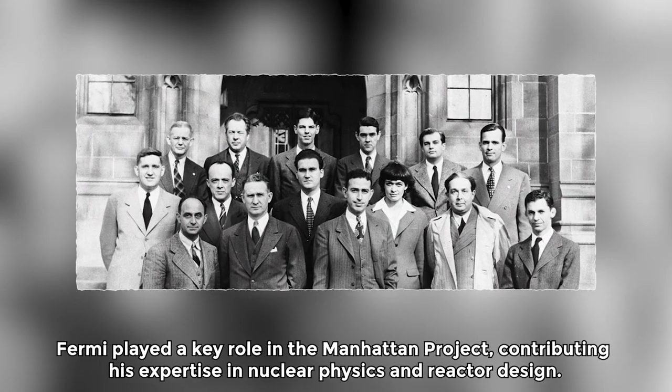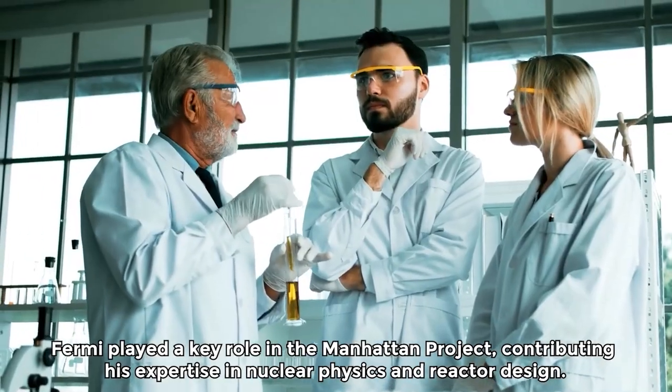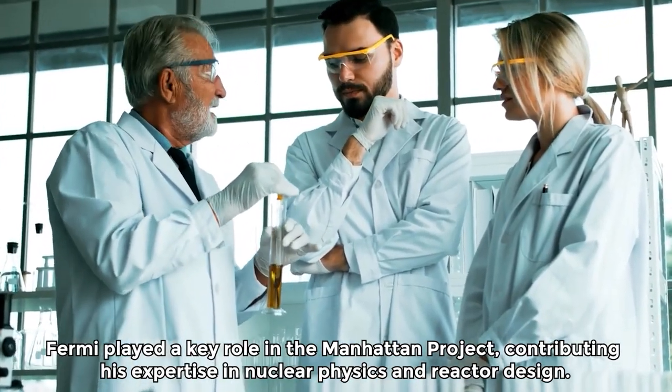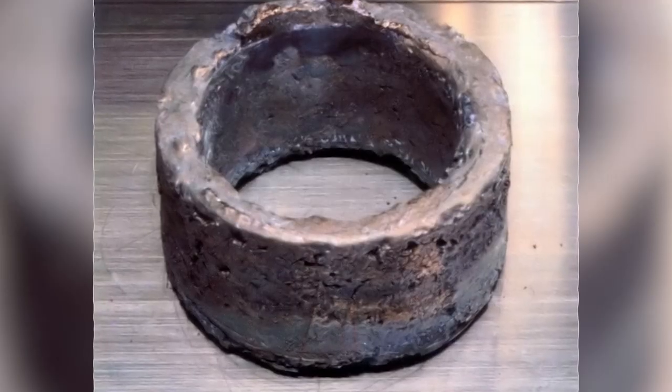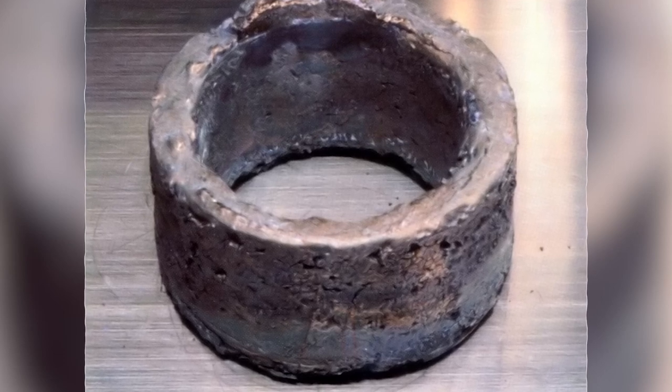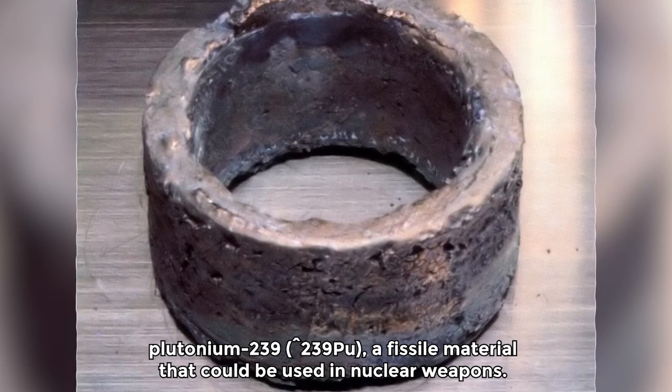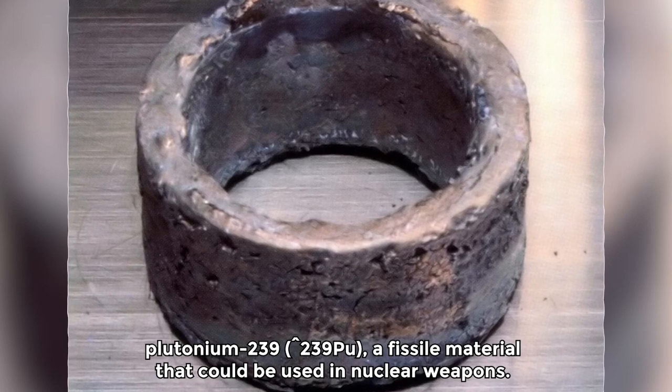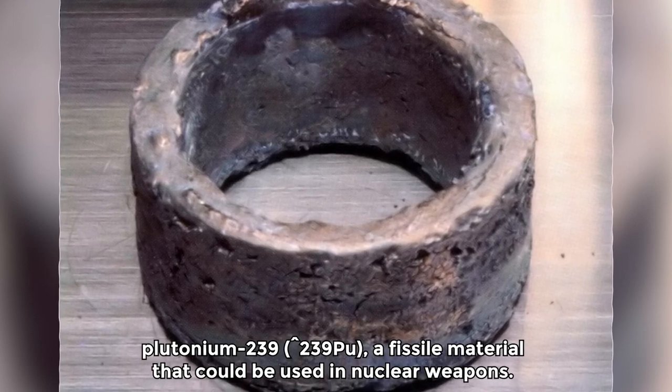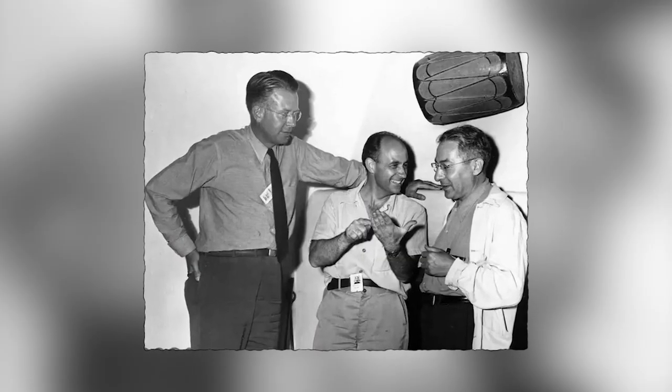Fermi played a key role in the Manhattan Project, contributing his expertise in nuclear physics and reactor design. He worked on the development of reactor designs for the production of plutonium-239 or 239Pu, a fissile material that could be used in nuclear weapons. Fermi's insights were instrumental in designing reactors that could efficiently produce the necessary plutonium for bomb production.